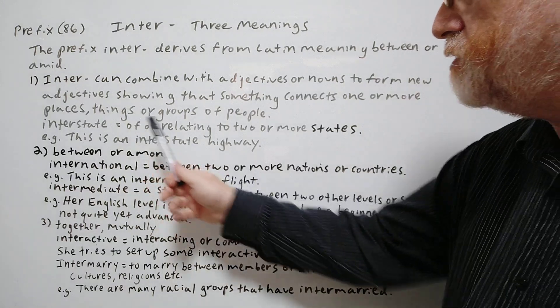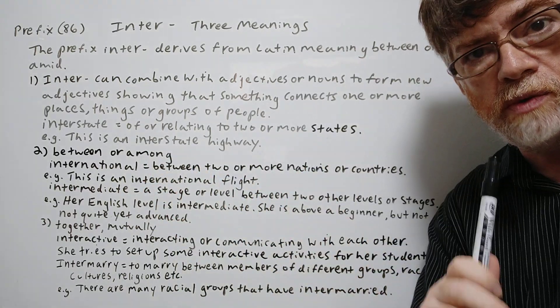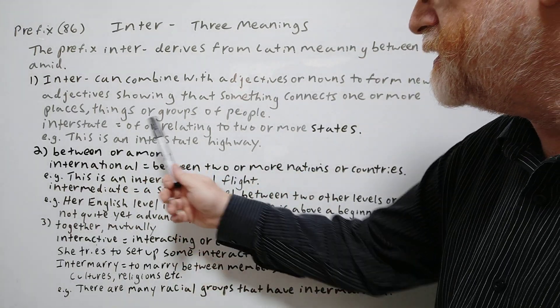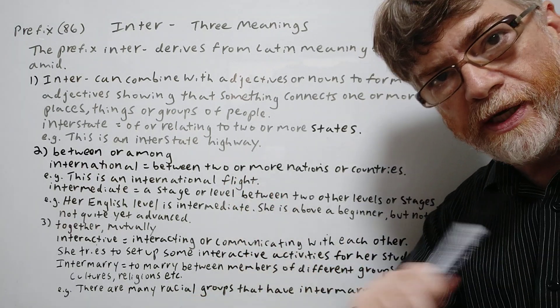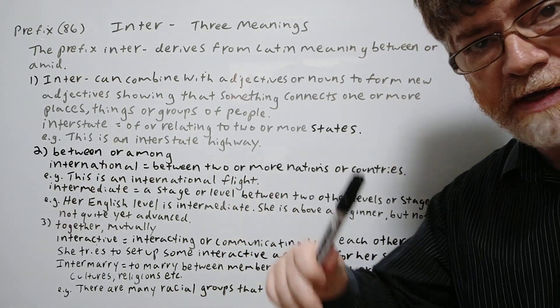Here's our example for this one. Interstate, relating to two or more states. This is an interstate highway. It crosses between two different states or maybe even more.